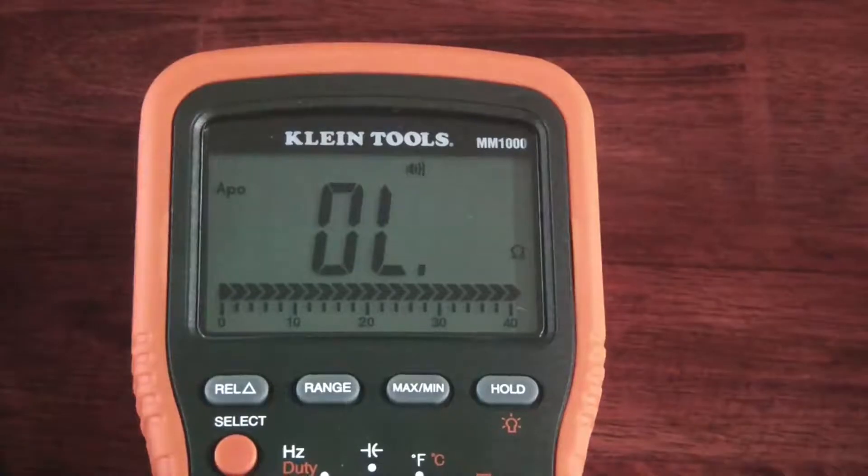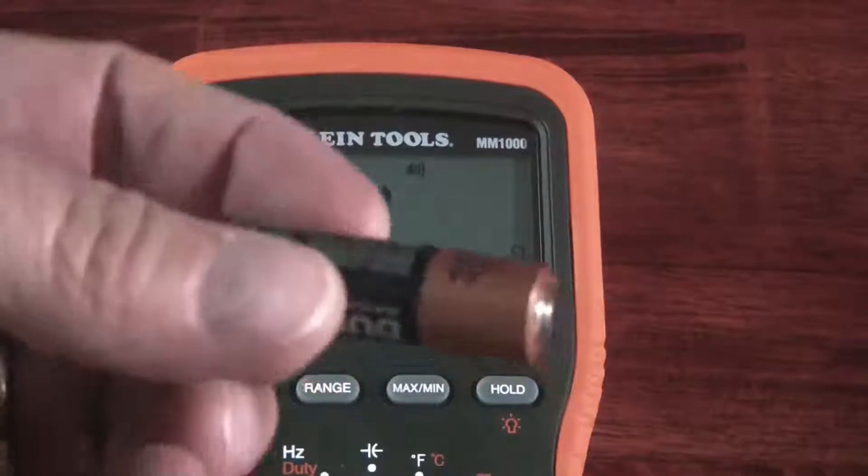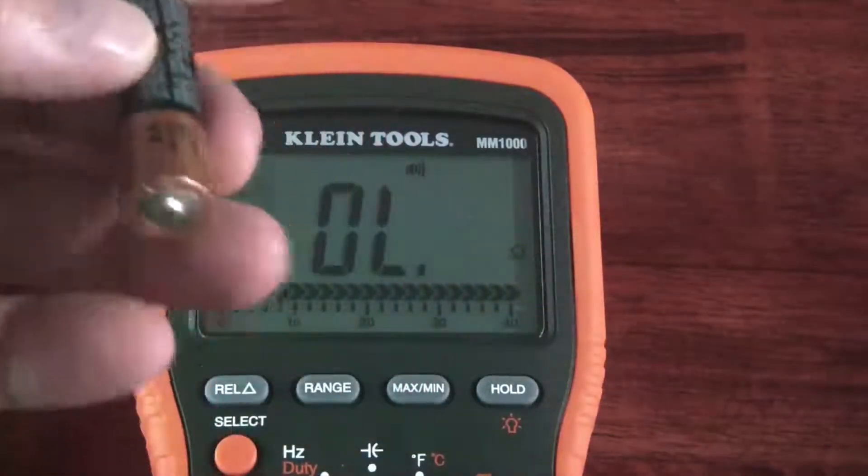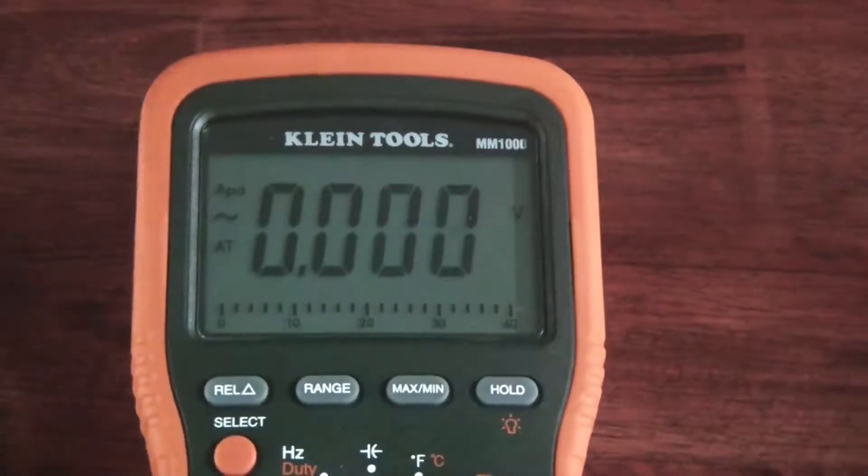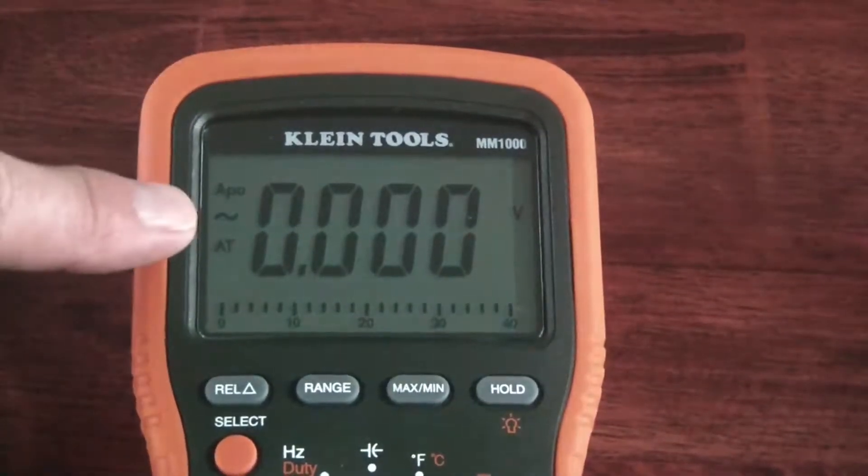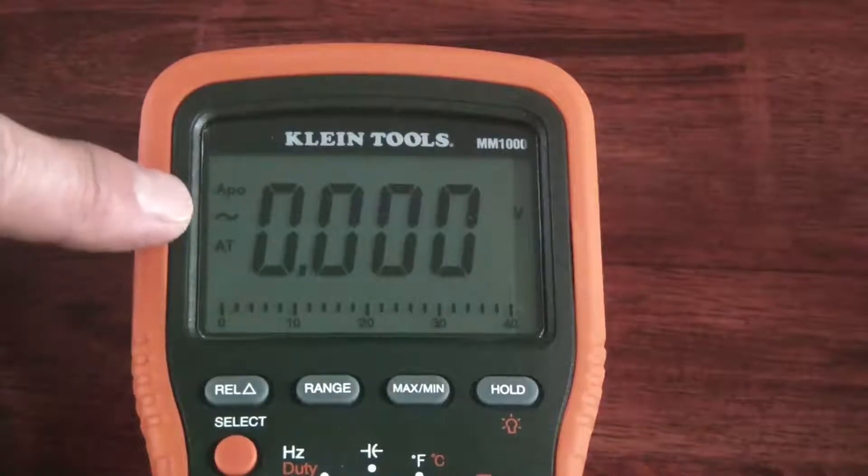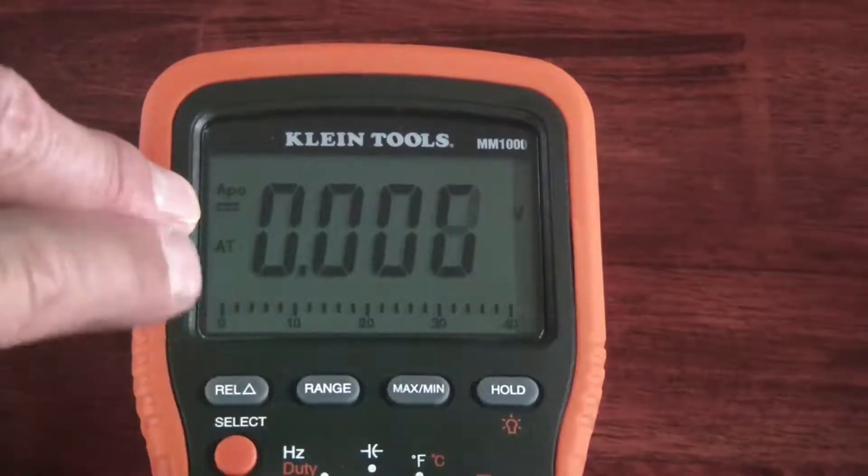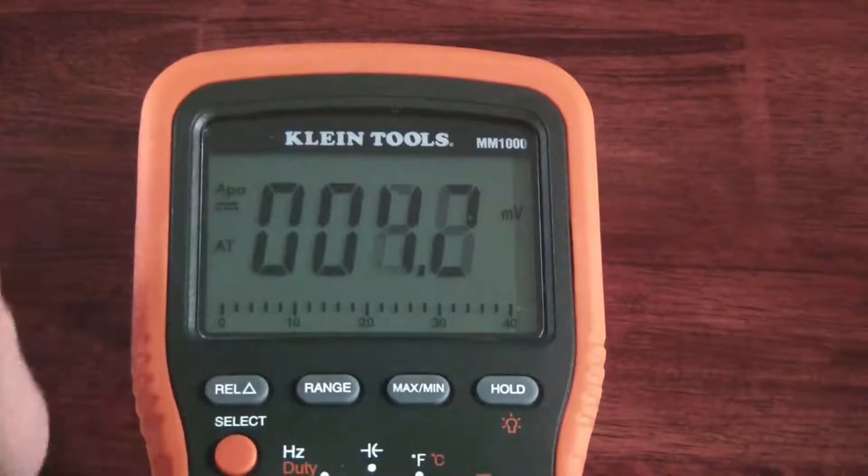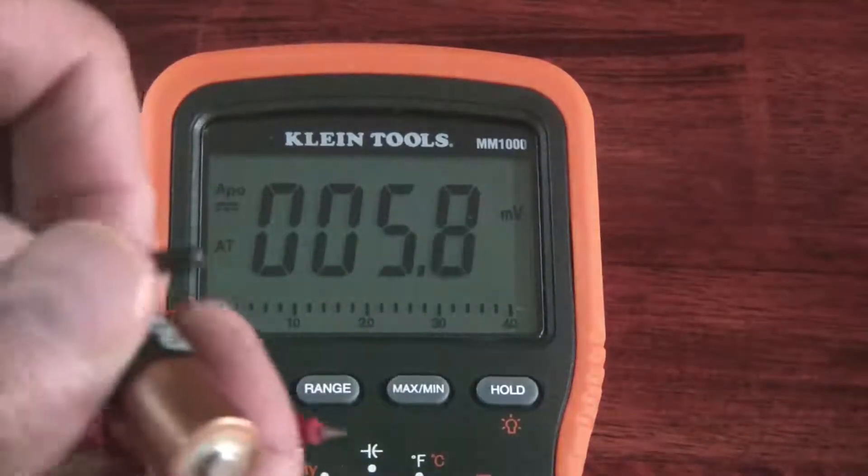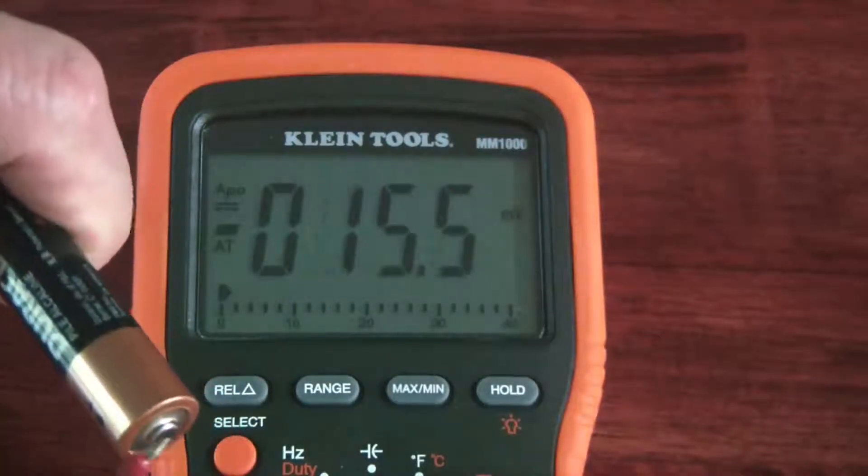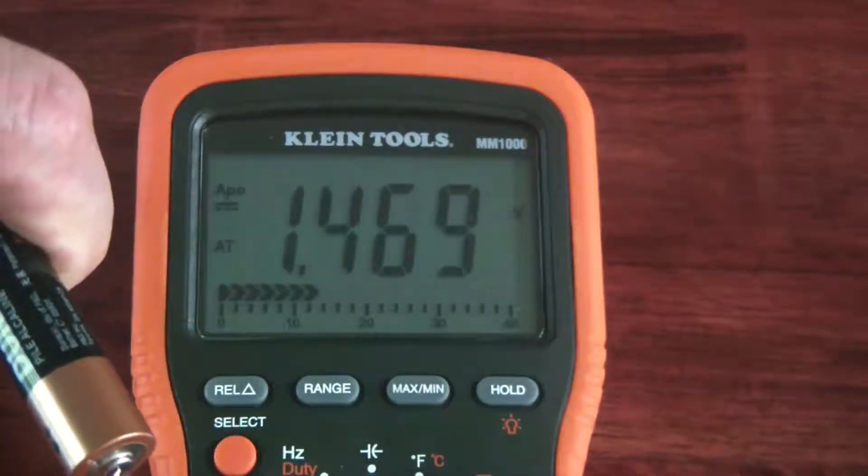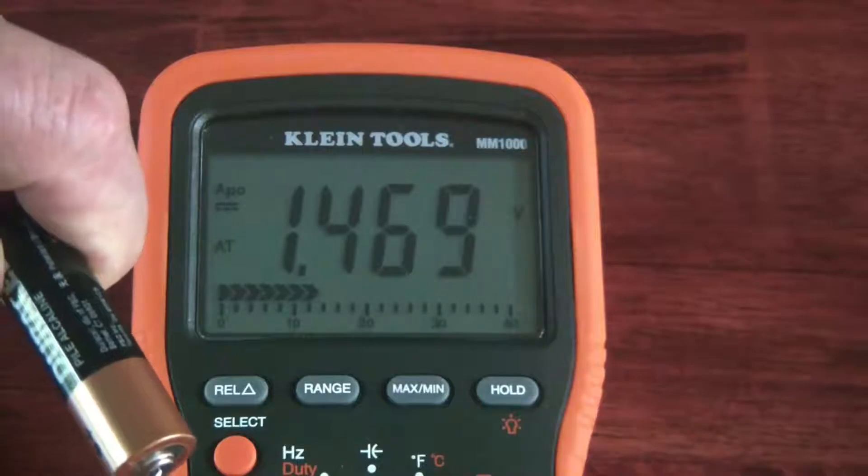And then I could also suppose I could check the voltage of a battery, if I can find a battery here. All right, I have a AA cell here, and this has been in a wireless mouse. So it's not necessarily going to have a full charge in it. So again, right now this is set to AC, so I need to switch this to DC. And we will check the voltage on this, 1.469.